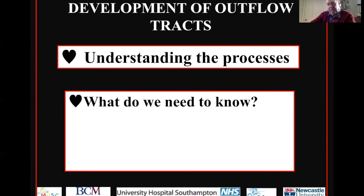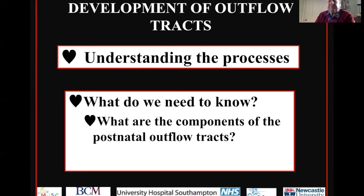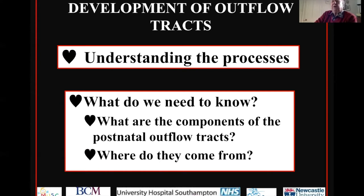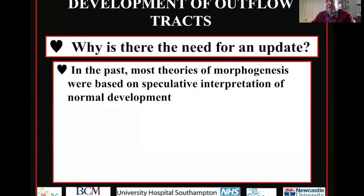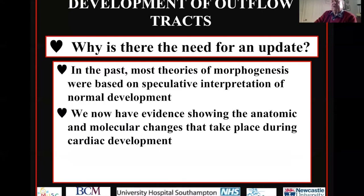What do we need to know if we are to understand development and maldevelopment? I believe we need first to understand the components of the postnatal outflow tracts, because only if we know how many parts we're trying to describe can we begin to understand where they come from. If you go into the books there are various accounts of development and maldevelopment of the outflow tract, but unfortunately until very recently most of those accounts were based on speculation. The situation has changed within the last 25 years because now we know much more about both the anatomic changes and the molecular changes that take place during normal development.